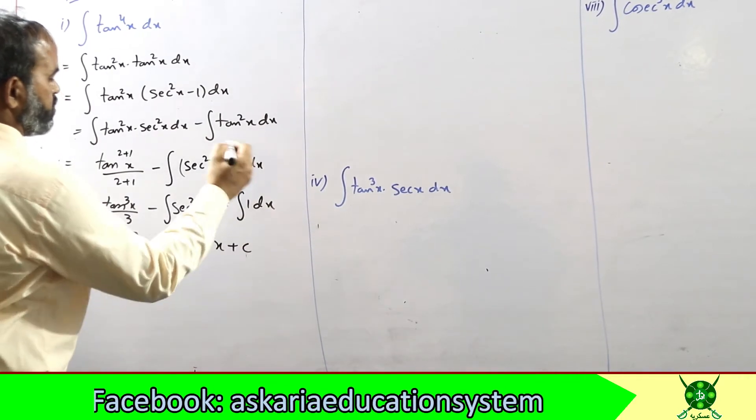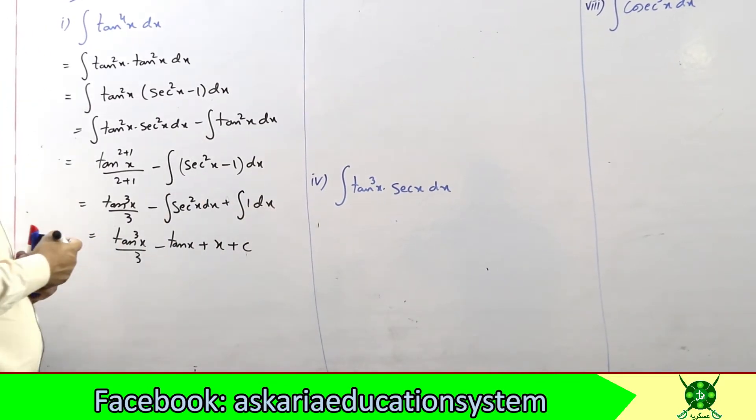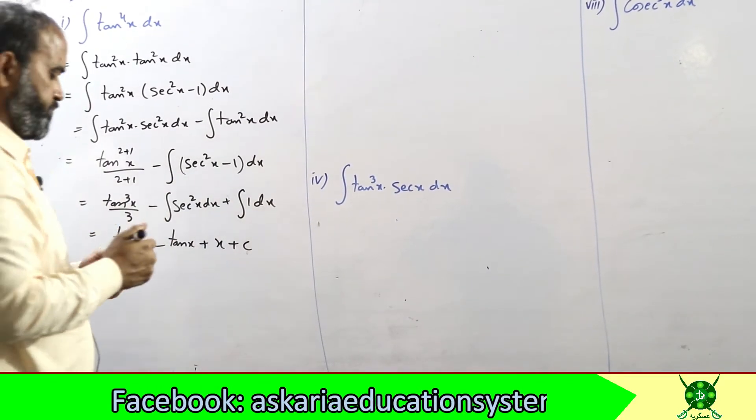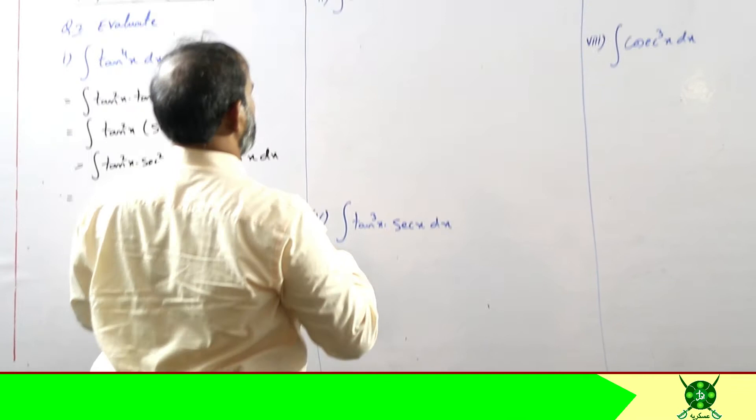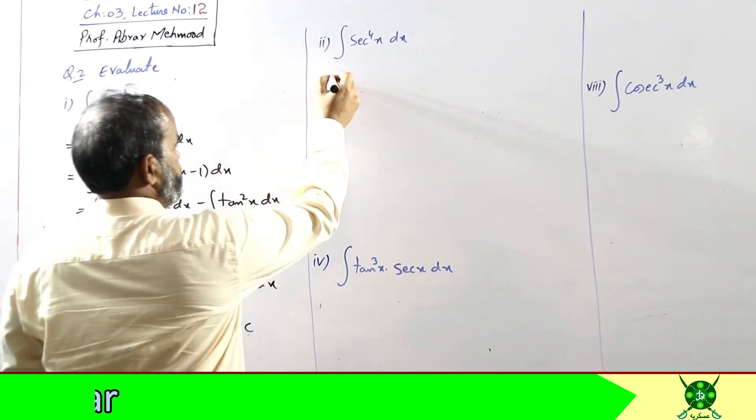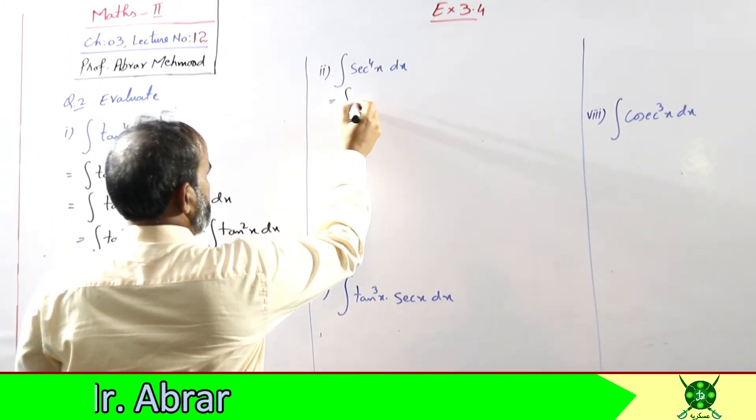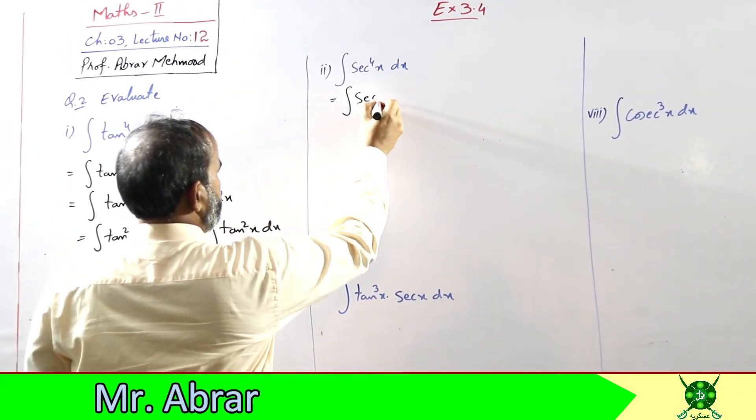तो answer आता है tan³(x)/3 minus tan(x) minus x plus c।